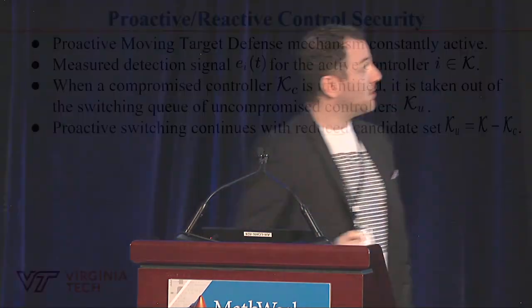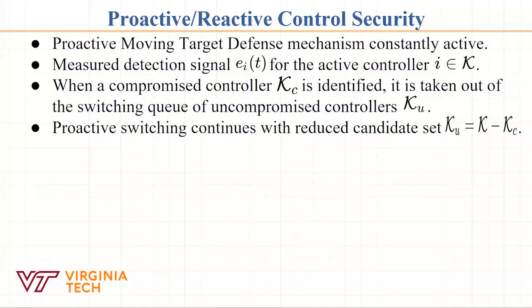Let me show how this proactive-reactive approach works. I measure the integral Bellman error ei, which is model-free. When I find that this is non-zero, I take that controller out of the queue. I continue switching between different controllers. So I switch randomly only between controllers, and when I find something is compromised, I take it out of the queue and continue switching among the others.